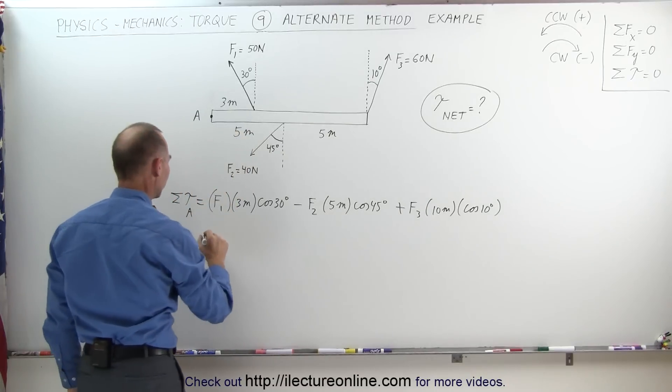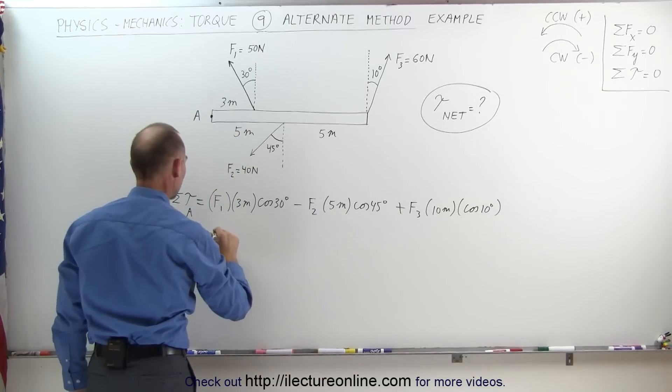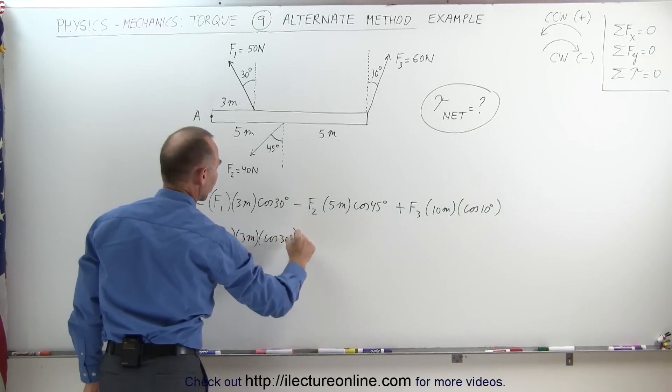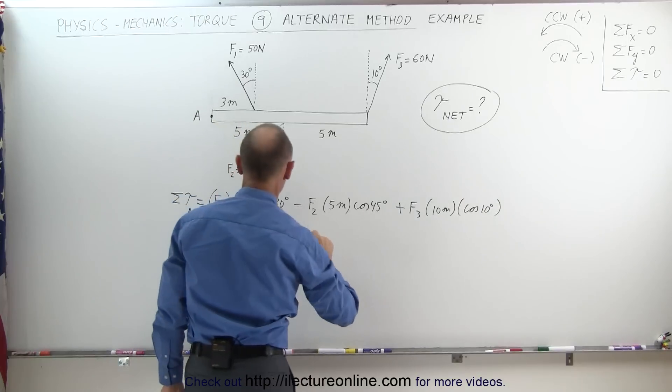Plugging in the values of the forces: this equals force 1, which would be 50 newtons, times 3 meters, times the cosine of 30 degrees.